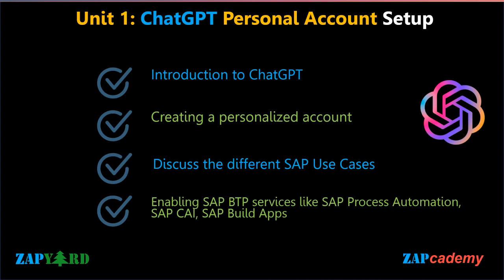We will discover the seamless synergy between SAP BTP and ChatGPT, enabling participants to leverage services like SAP Process Automation, SAP Conversational AI, and SAP Build Apps. We will learn how to harness these services to build intelligent bots, automate workflows, and develop cutting-edge applications.